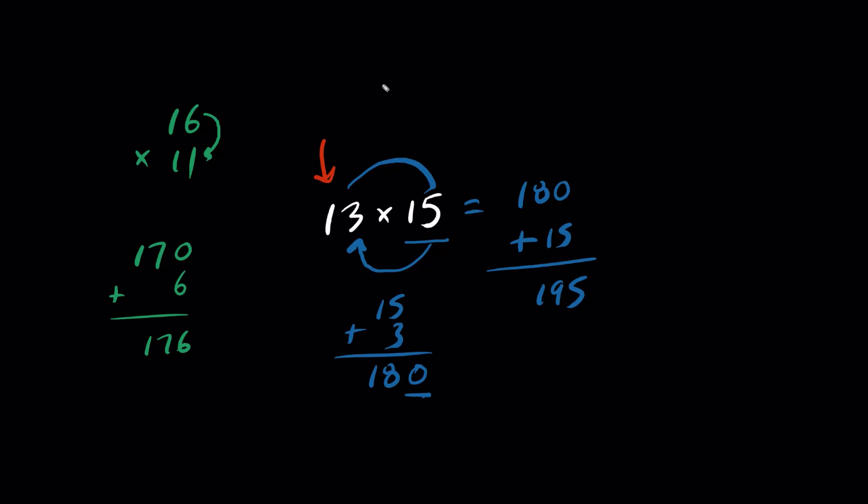Let's go back to this question here. Traditionally, you would write multiplication on top of each other and shoot lasers. 5 times 3 is 15. 5 times 1 is 5. And we add one more, 6. 1 times 3 is 3. And 1 times 1 is 1.